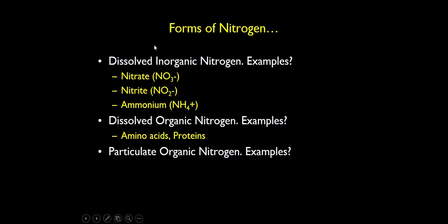We can also have particulate sources of nitrogen. On the smaller scale, things like bacteria and detritus — all these particles that get into the water are also going to be sources of nitrogen. Of course they're going to be organic, because if it's bacteria it's still in a living form, and detritus are the breakdown products of living organisms. This is all the nitrogen that's coming down the river.